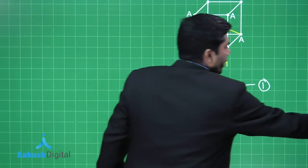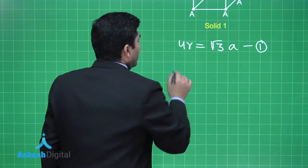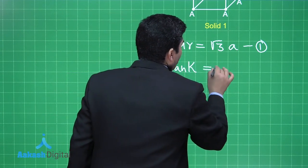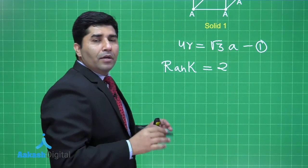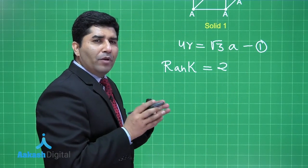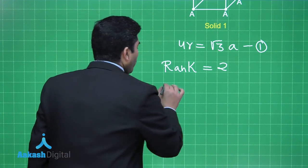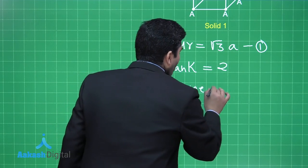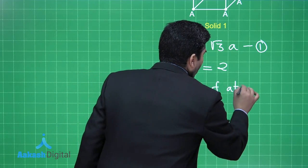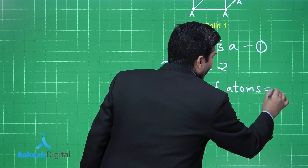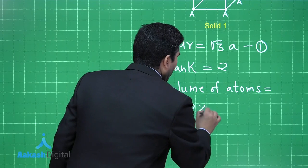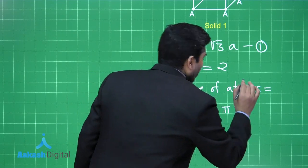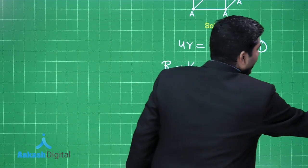The rank of a BCC unit cell is 2, meaning the total number of atoms per unit cell equals 2. Therefore, the volume occupied by atoms equals 2 times (4/3)πR³. Now there is a change in the second unit cell, where atom B at the body center has double the radius of atom A.